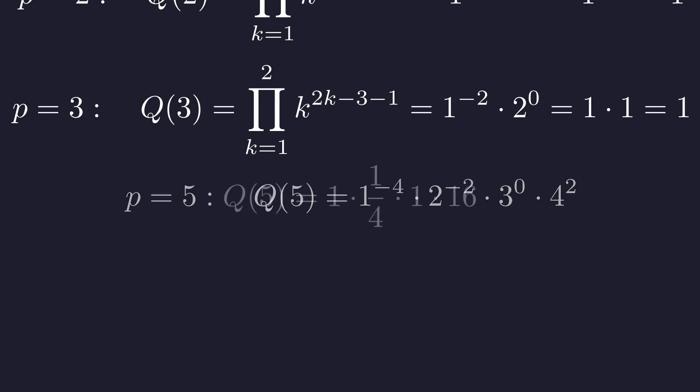We have 1 times one fourth times 1 times 16. At first glance this looks like it should be some ugly fraction, but watch what happens when we multiply these together—all those terms collapse down to just 16 over 4. And here comes the magic moment: it's exactly 4, a perfect integer.